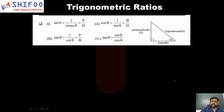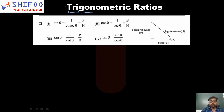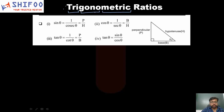Let's start with what trigonometric ratios are. The study of trigonometry basically started with the study of the three angles of a triangle, because trigonometry, as the name suggests, is composed of three words: tri, gonos, and metron. Tri means three, gonos means angles, and metron means measuring. So it started with the measurement of the three angles of a triangle and then it expanded itself.